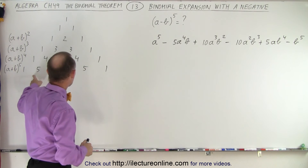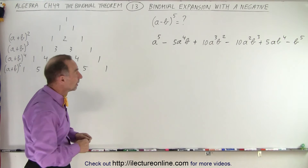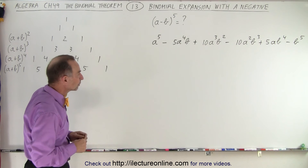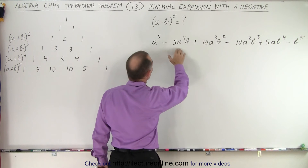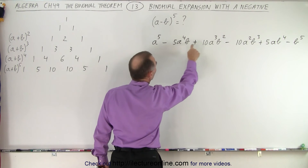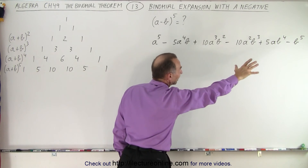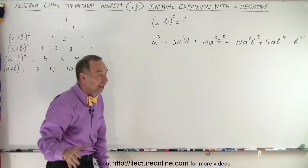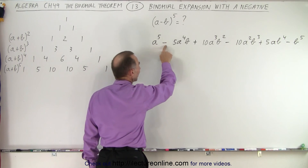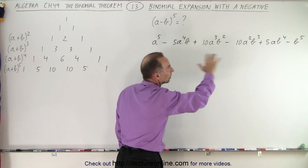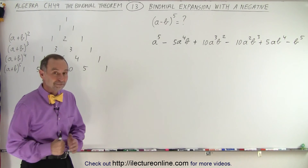You get the numerical coefficients from Pascal's triangle or from the method using the factorials. And then when we write the exponents — starting with a to the fifth, a to the fourth, a cubed, and with b to the zero, b to the first, b to the second — we do everything exactly the same. At the very end when we plug in the signs, we always start with a positive on the first one, then negative, positive, negative alternately until we've added all the signs. And that is how it's done.